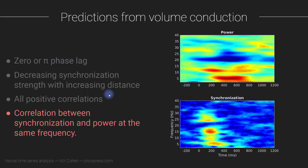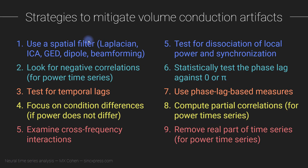Those are some of the patterns you can expect in your results if your synchronization is actually due to a volume conduction artifact. Now I'd like to discuss strategies you can use to mitigate volume conduction artifacts. I'm slightly embarrassed about this, but there are in fact 10 — the slide goes 1 through 5 and then 5 through 9, so apparently I'm not very good at counting. Next time I'll use MATLAB to do the counting. Anyway, I'll walk through all of these quickly; I'll cover almost all of them in the rest of this section.